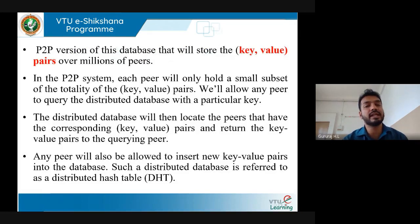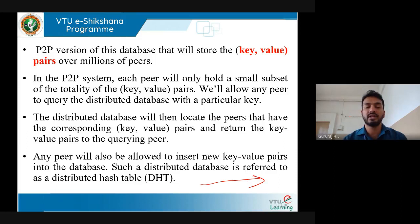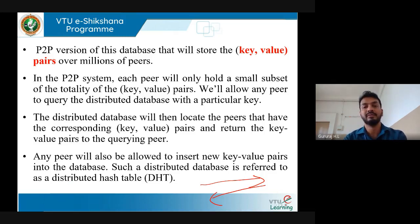In peer-to-peer architecture, key-value pairs are distributed across peers. Each peer holds only a small subset of the total key-value database. Any peer can query the distributed database with a particular key, and the distributed database locates the corresponding peer and returns the key-value for that query — similar to how a database management system responds to queries. Any peer can also insert new key-value pairs into the database.